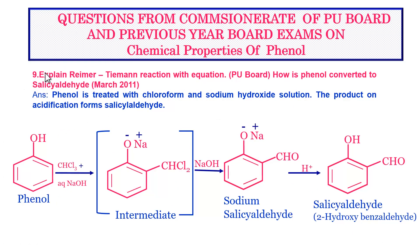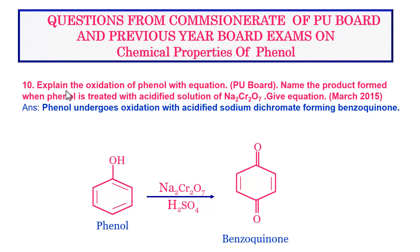Next, a very important question: explain the Reimer-Tiemann reaction with equation. Alternatively: how is phenol converted to salicylaldehyde? This was asked in the March 2011 board examination and is usually a three-mark question. Phenol is treated with chloroform (CHCl3) and sodium hydroxide; the intermediate formed further reacts in presence of NaOH, and upon acidification gives salicylaldehyde (2-hydroxybenzaldehyde).